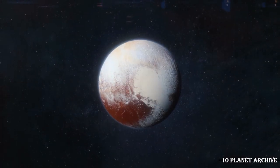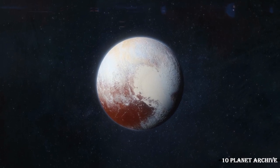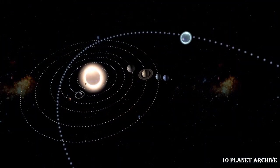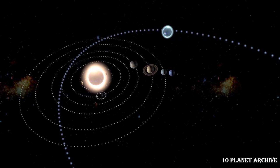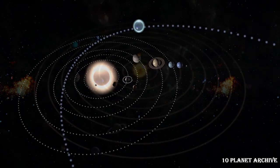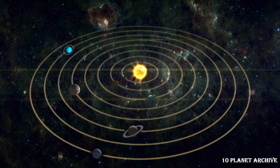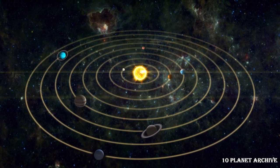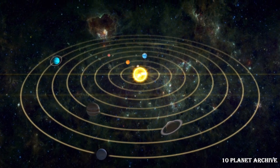One day on Pluto takes about 153 hours. Its axis of rotation is tilted 57 degrees with respect to the plane of its orbit around the Sun, so it spins almost on its side. Pluto also exhibits a retrograde rotation, spinning from east to west like Venus and Uranus.